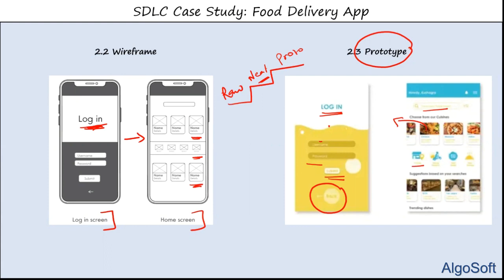Prototypes can be handed to clients so they can navigate through screens and verify the product looks correct. When prototypes are provided with functionality using JavaScript or other languages, clients can experience the flow. If they approve, the final product development begins.